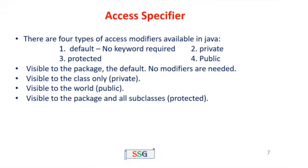Access specifiers: in Java, there are four access specifiers available inside the class definition — default, private, protected, and public. Default is visible to the package; no modifications are needed. Private is only visible to the class itself — only the corresponding class can access private members. Public is visible to the world; anyone can access the data. The important access specifier, protected, is visible to the package and all subclasses, so the protected member plays a major role in inheritance.